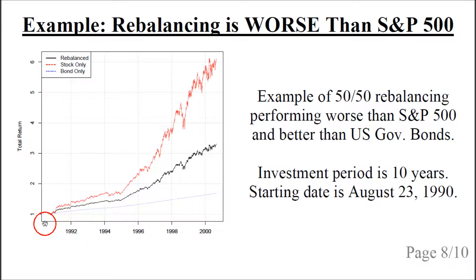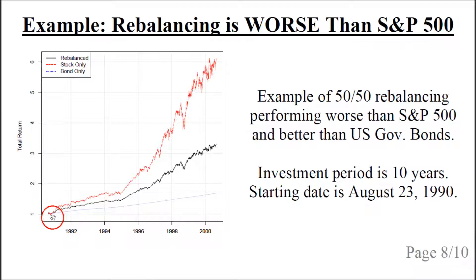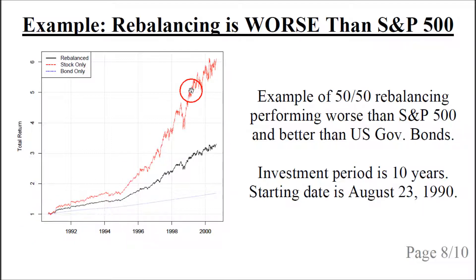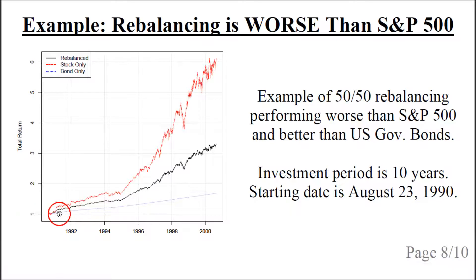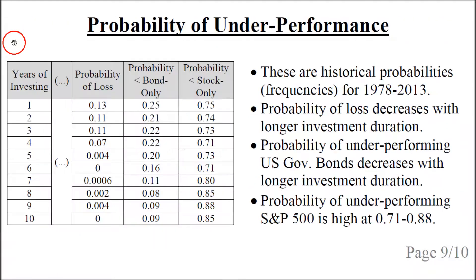Here's an example where the rebalancing is worse than the S&P 500 but better than US government bonds. The bonds are shown in the blue line, the rebalancing as the black line, and the S&P 500 as the red line. This was a period of a great bull market for the S&P 500, and because only half of our portfolio was invested in stocks, we only got about half the return plus half the return of the bond.